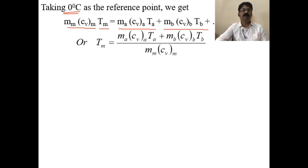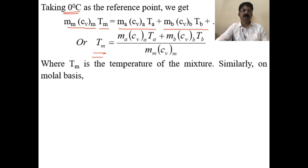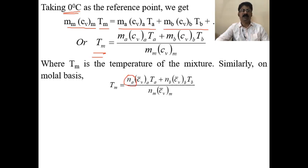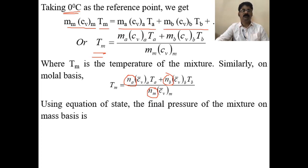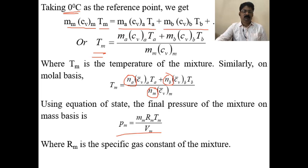From this expression, the temperature of the mixture Tm can be written as: Tm = (mA · cvA · TA + mB · cvB · TB) / (Mm · cvm). On a molar basis, mass values are replaced by number of moles and cv is taken in molar units. Using the equation of state pV = mRT, the final pressure of the mixture on a mass basis is: Pm = Mm · Rm · Tm / Vm, where Rm is the specific gas constant of the mixture.